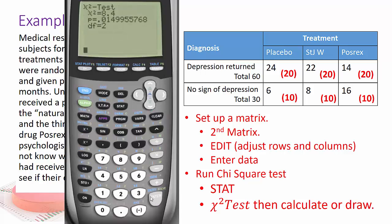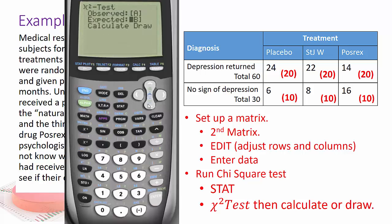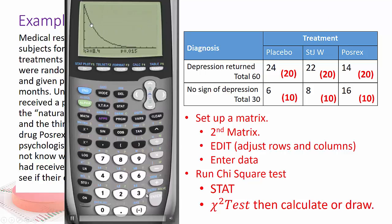And you can hit calculate. And you can see I got the same chi squared and the same probability, and even the degrees of freedom. Or you can also draw it. And you can see the distribution doesn't even have that little dip here because our degrees of freedom is so low at two.